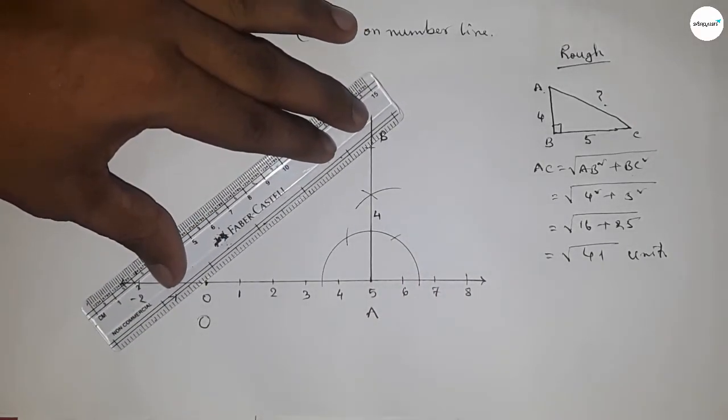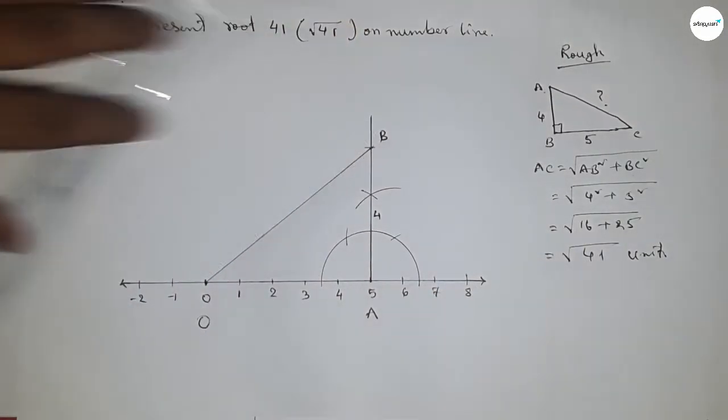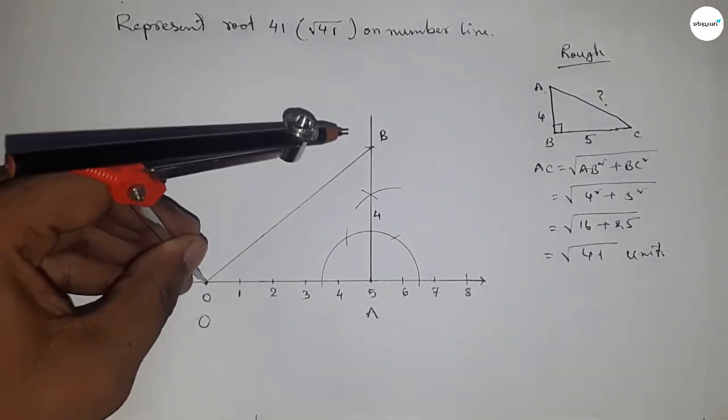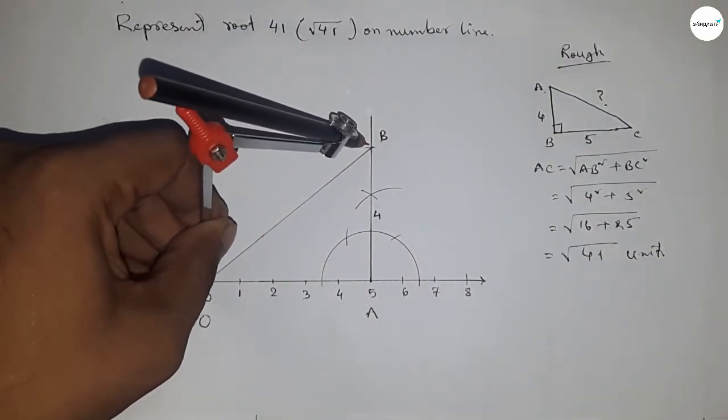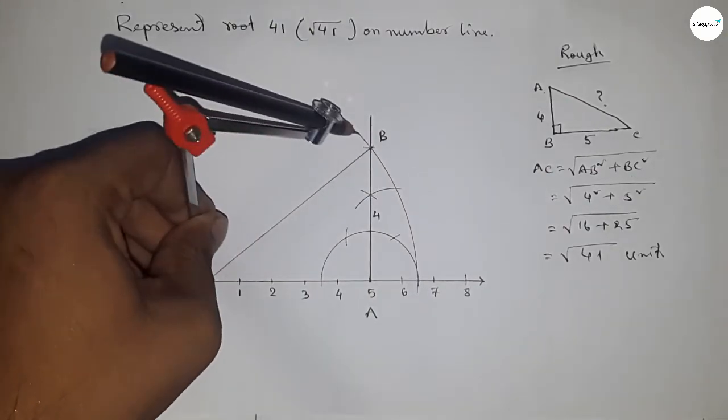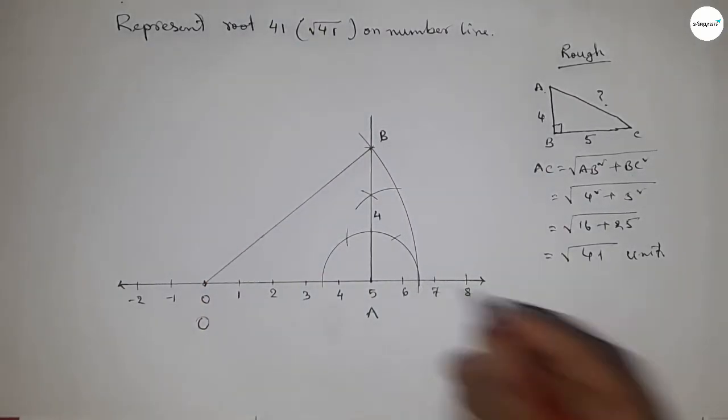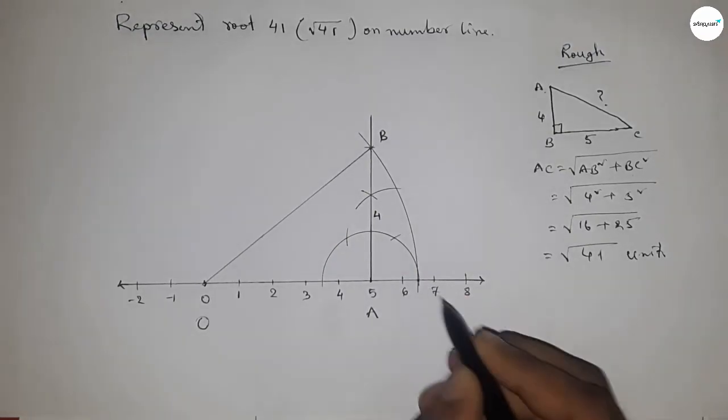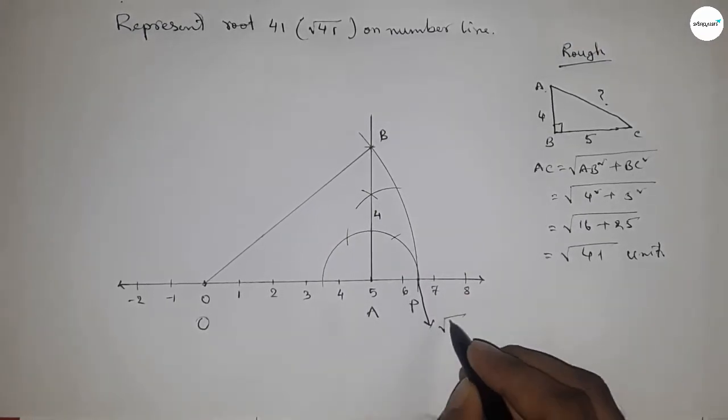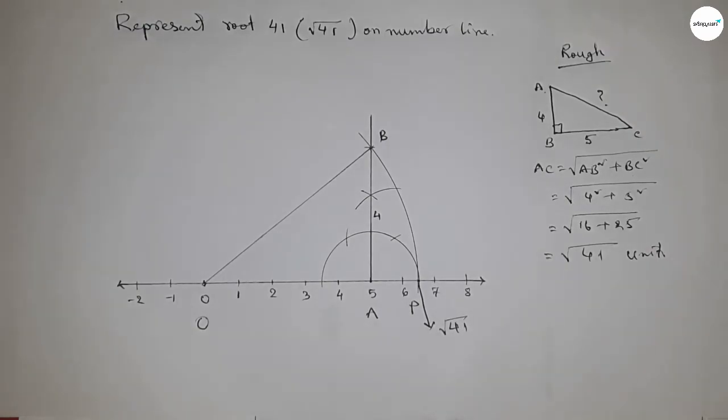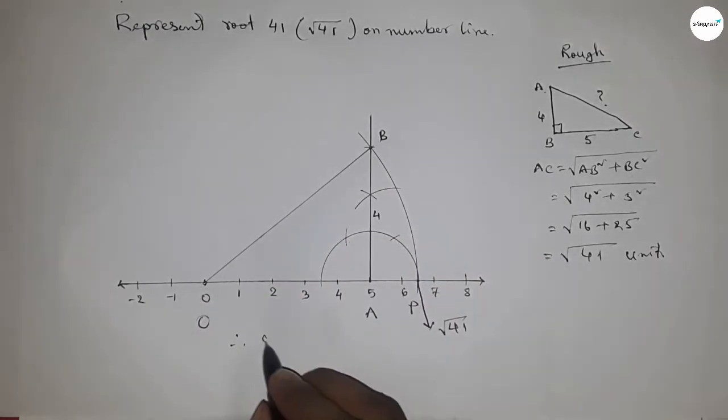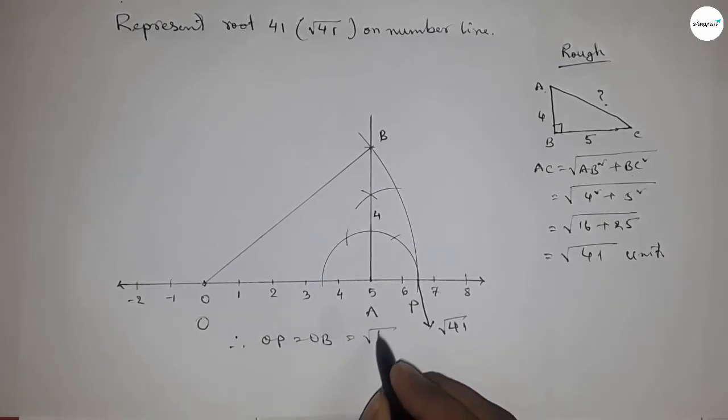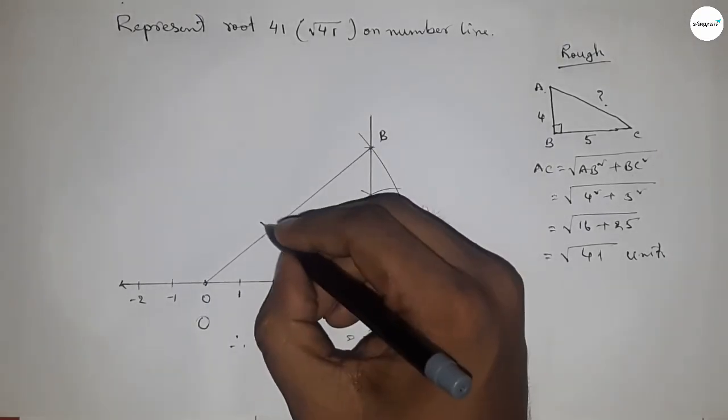Now take the length OB by compass and draw an arc which meets the number line at a point, and this is point P. So this is point P and this is the representation of root 41 on the number line. Therefore, distance OB and OP are equal, equal to root 41.